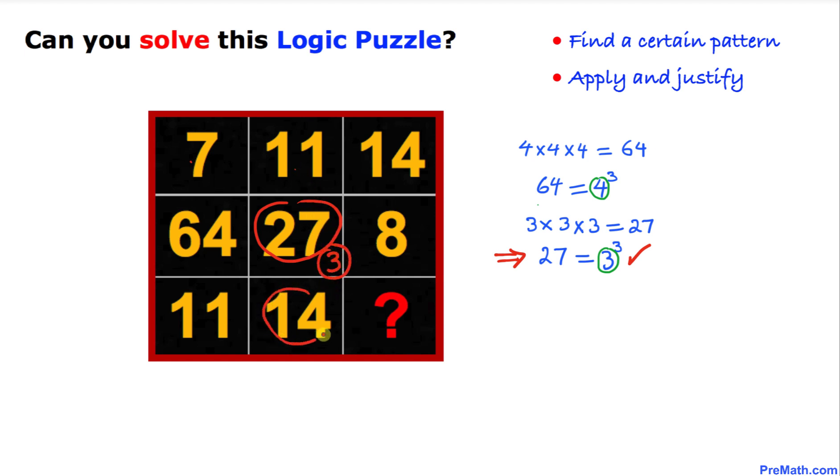And finally let's look at this number 8. It could be written as 2 times 2 times 2, or in other words 8 could be written in terms of exponent as 2 power 3.